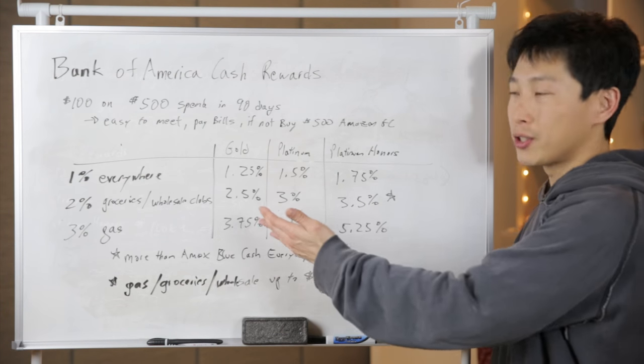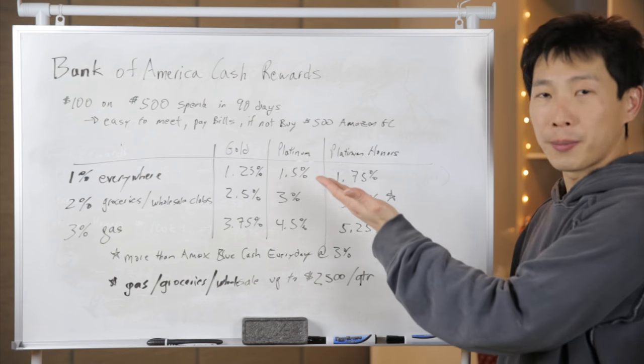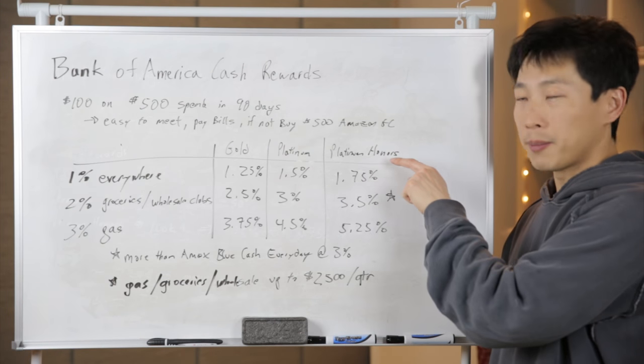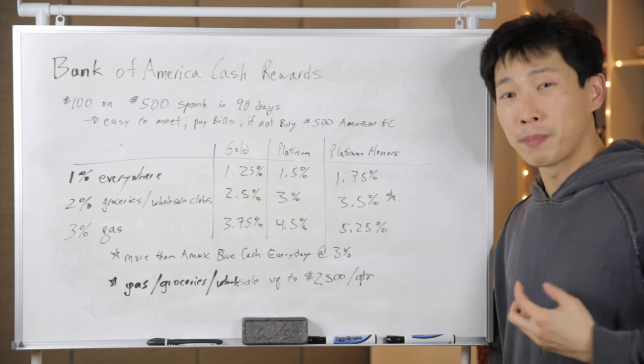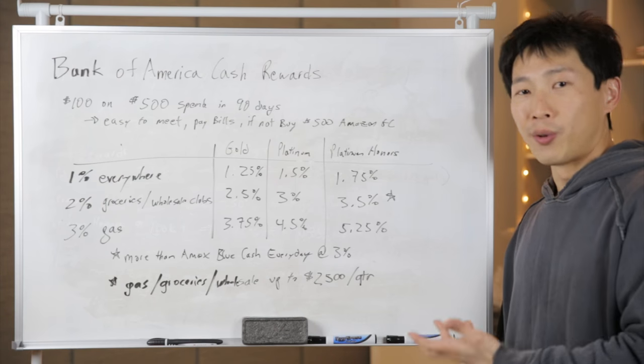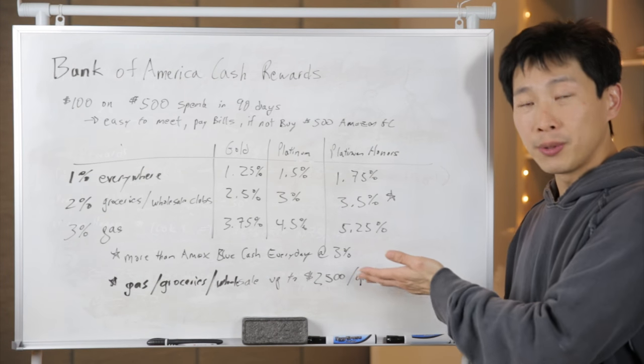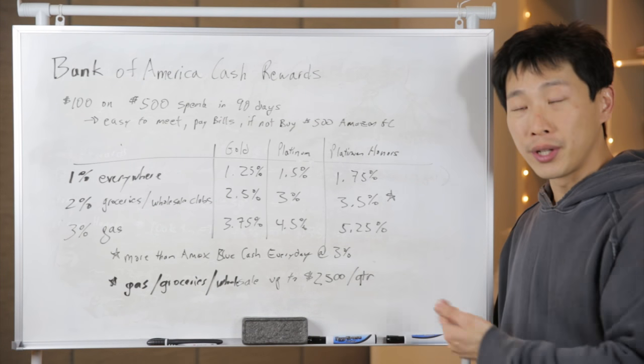You can boost those percentages up to 1.25%, 1.5%, 1.75% if you're in the Platinum Honors tier, which might be pretty hard to attain for a lot of people. But if you're able to attain that, you can get pretty good rewards.